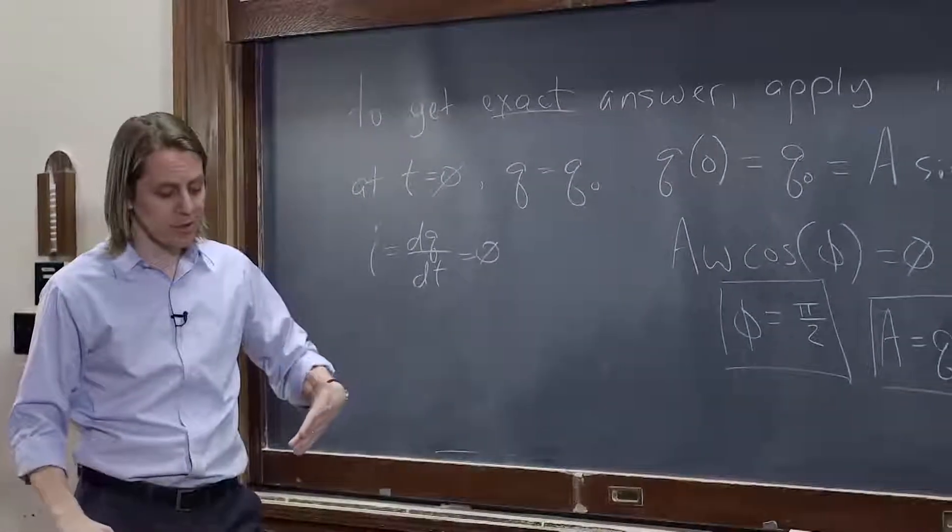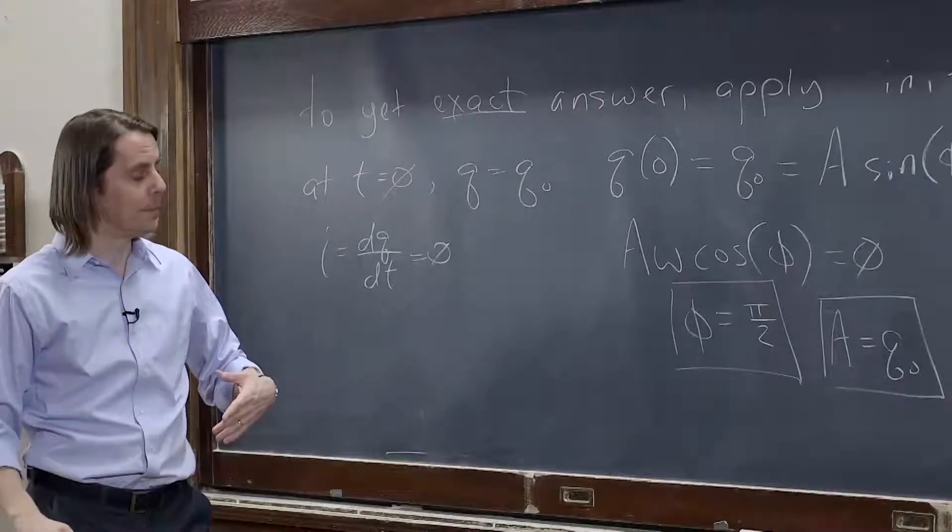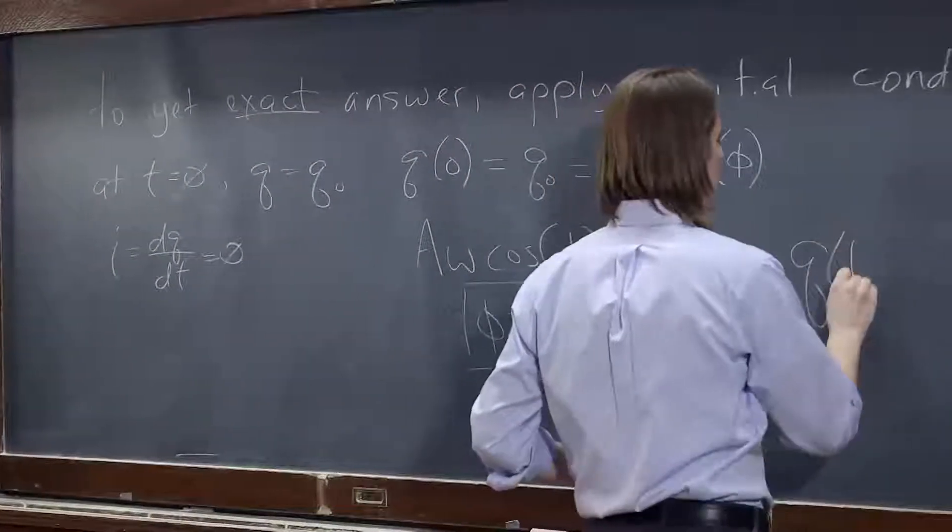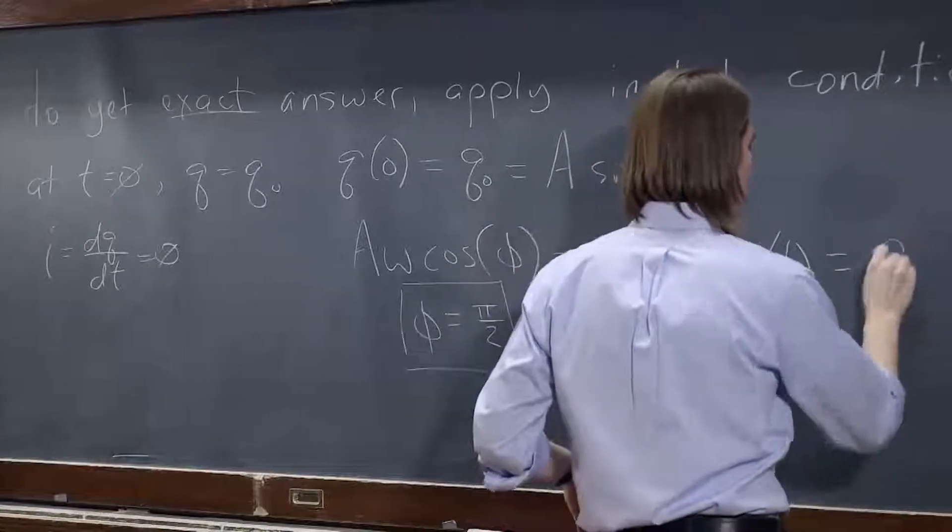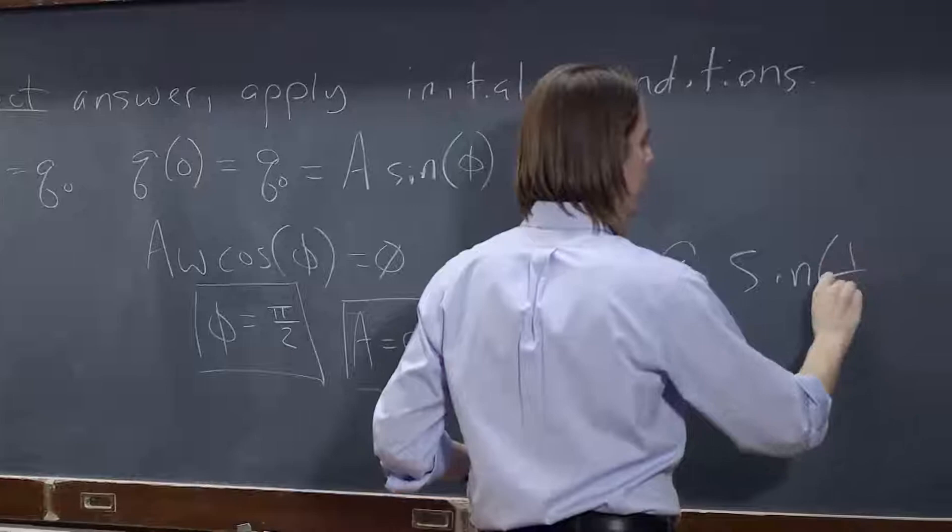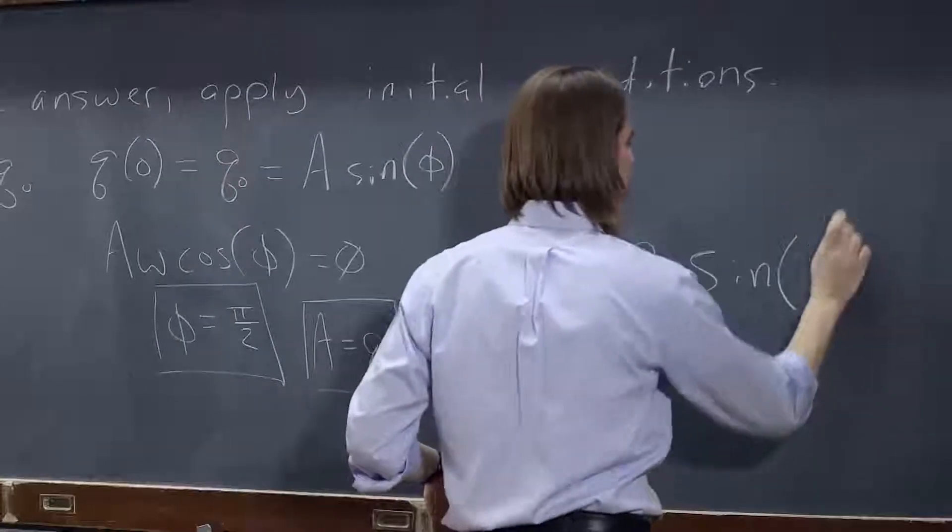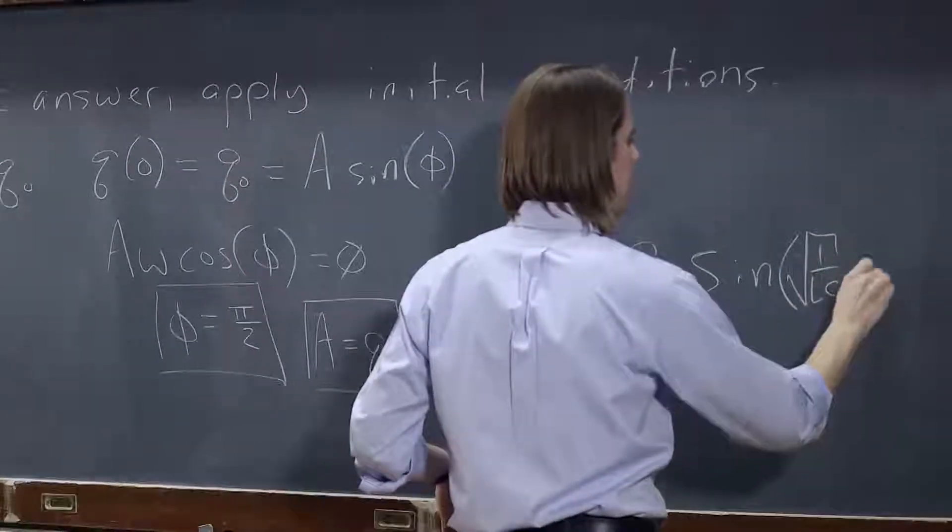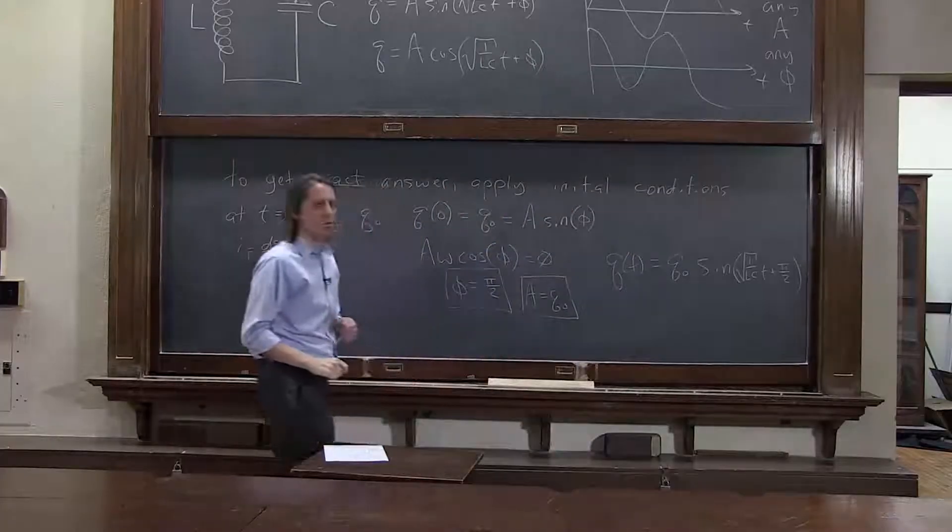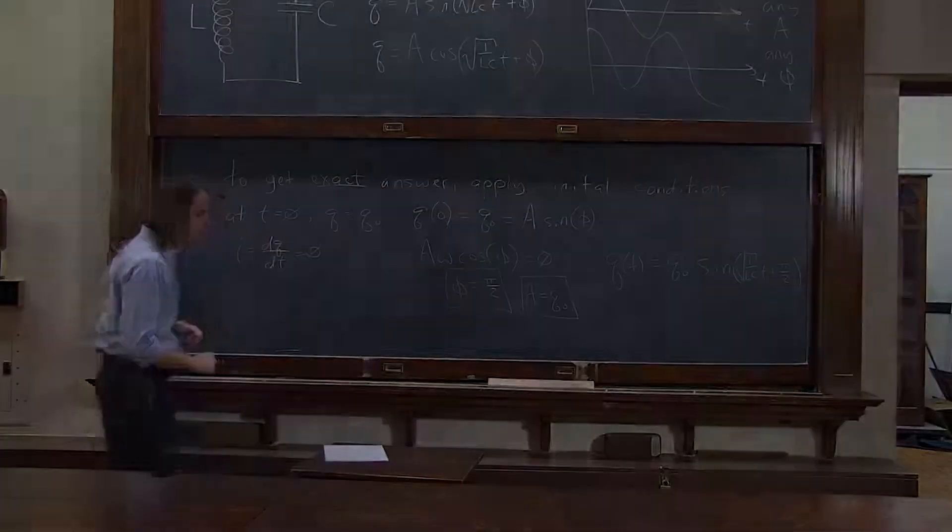So we just use our boundary conditions to find the real solution, which is q of time. Is q-naught sine 1 over the square root of, or the square root of 1 over LC. Same thing. T plus pi over 2. That would be the real full solution.